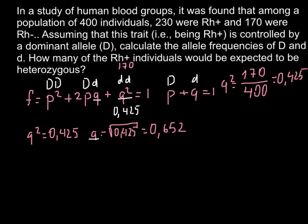The answer would be 0.652, so this is q. Now we know q and q squared. When we know q, we can find the frequency of p. We have to use this formula, and it's very easy. If we know q, we just have to subtract this number from 1. p equals 1 minus q, or p equals 1 minus 0.652. The answer would be 0.348.